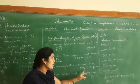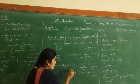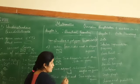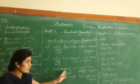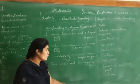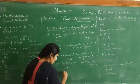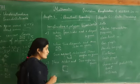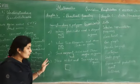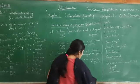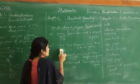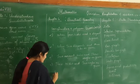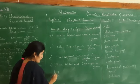Two adjacent sides and three angles are given - you will know the full quadrilateral simultaneously after drawing. Three sides and two angles are also given as a condition, and the last side becomes known after construction. So you construct the quadrilateral by reading the given data carefully.